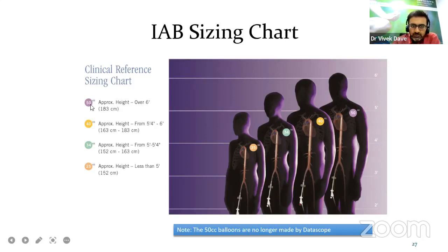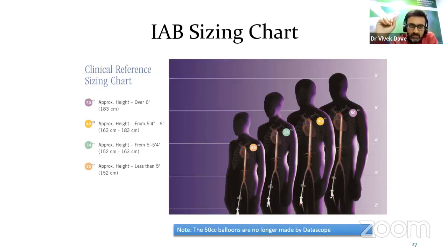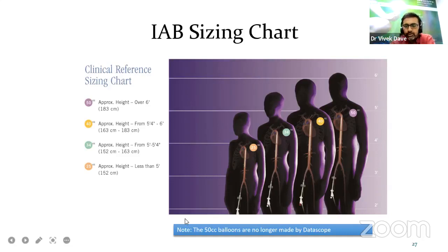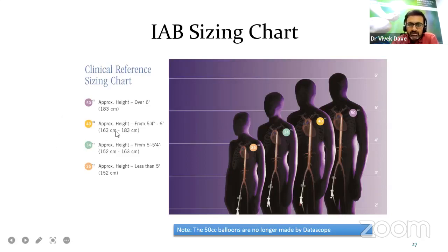If the height is over six feet, the 50 cc size balloon is used. Five to six feet is 40 cc; five to 5.4 feet is 34 cc; and less than five feet is 25 cc. The 50 cc balloons are no longer made by Datascope, so the widely used sizes are 34 cc and 40 cc. The approximate lengths are 163 to 183 cm and 152 to 163 cm.